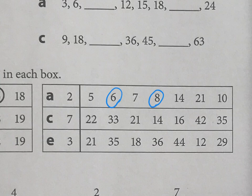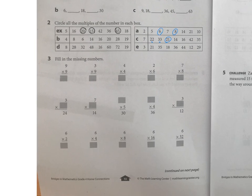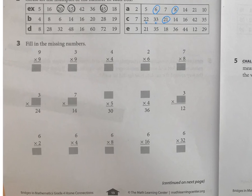Same thing for 7: 22 — no, 77 — no, 21 — yes. If 7 times something equals that number, then it's a multiple. And again, I think part 3 you can do on your own.